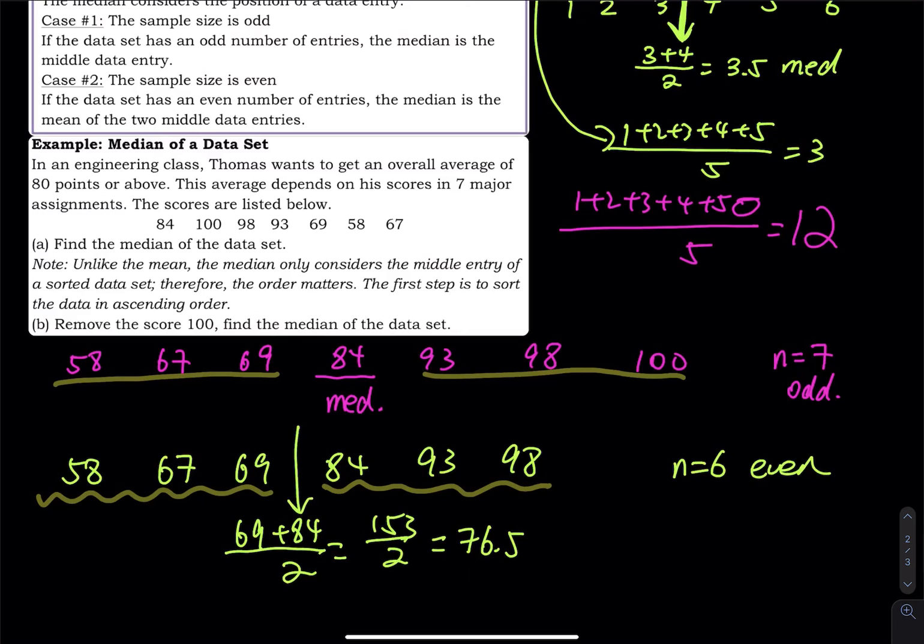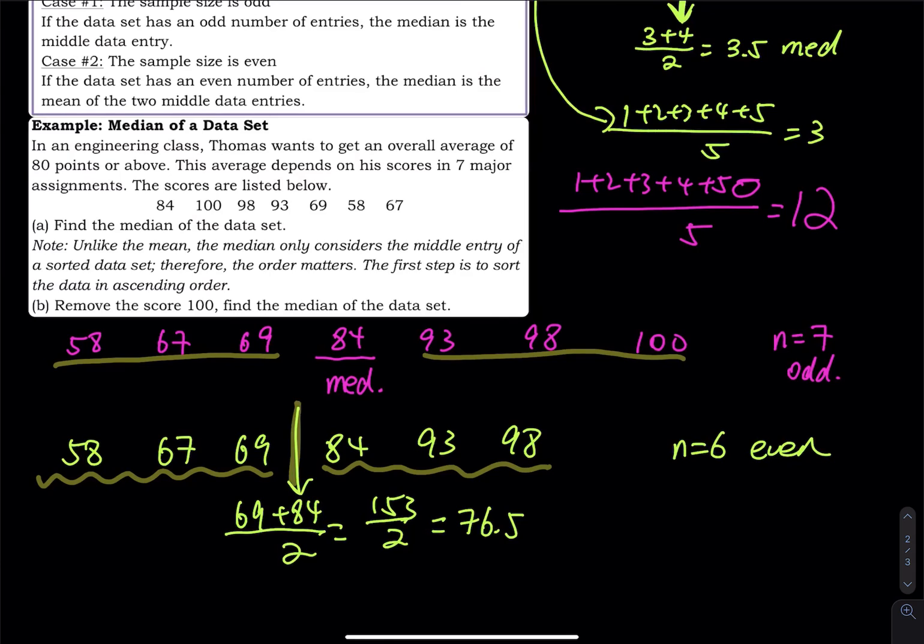Okay, now let me ask you again in the green data set, which one is the median, 69 or 84? The answer is they are not the median at all. This arrow is the median, 76.5.